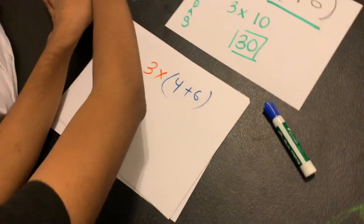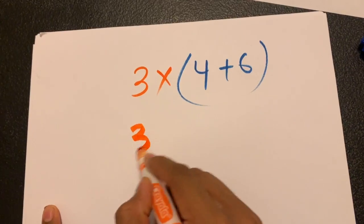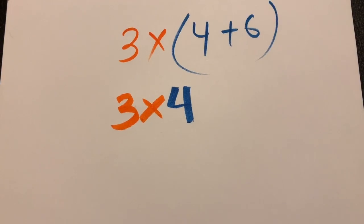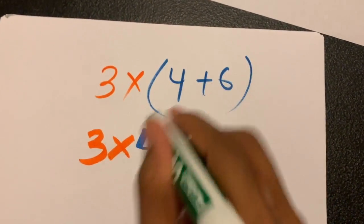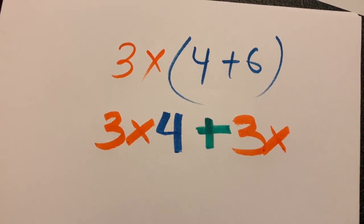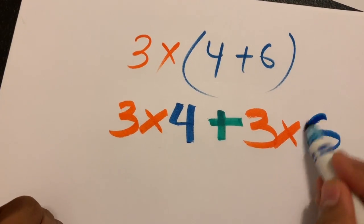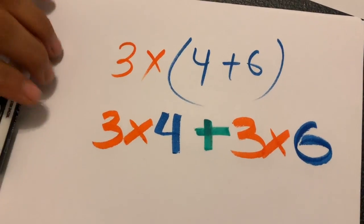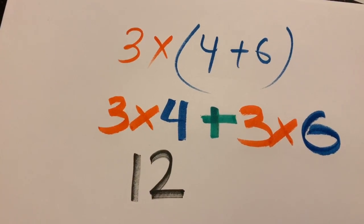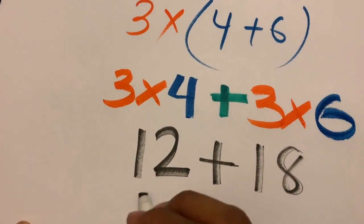You can use color coding. Definitely! So I give one orange to each blue. Three times four — that's the first blue I distributed to. Then I add, because there's an addition sign, to the other blue: three times six. Now I just simplify. Three times four is 12, three times six is 18, add them up and I get 30.